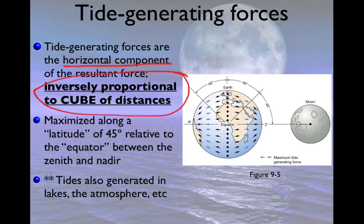Both of those forces are related to the distance from the Moon — they are inversely proportional to the cube of the distance between the two objects. That means the distance between the Moon and the Earth produces a cubic change in the strength of the tide-generating force. Tide-generating forces tend to be maximized along a latitude of 45 degrees relative to the equator and the zenith. In all these pictures, we've drawn the Moon in a perfect line over the equator, and that doesn't actually happen.